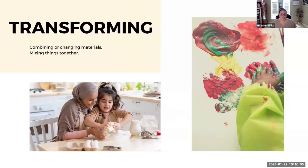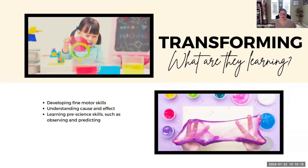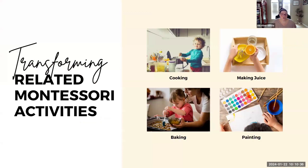The next schema is the transformation schema, which involves an interest in combining or changing materials, or mixing things together. In this schema, young children are developing their fine motor skills and continuing to learn about cause and effect. They're also diving into pre-science skills of observation and prediction — what's going to happen when I mix these things together?